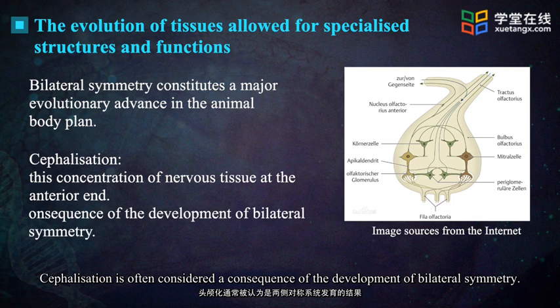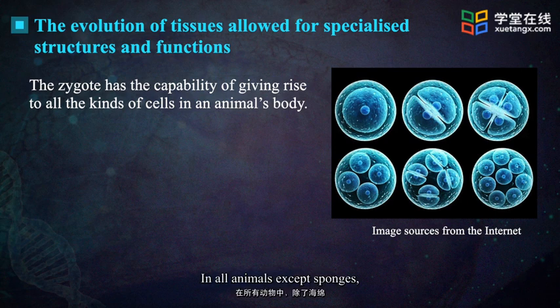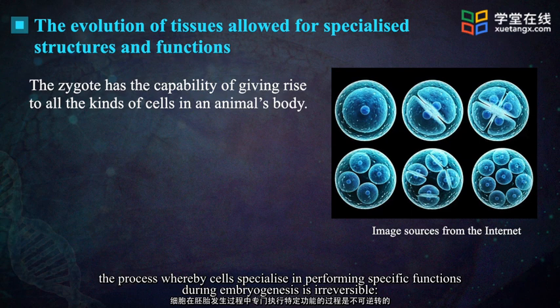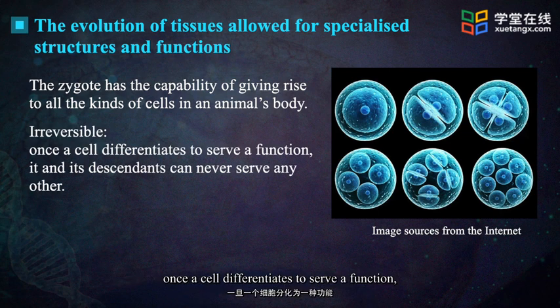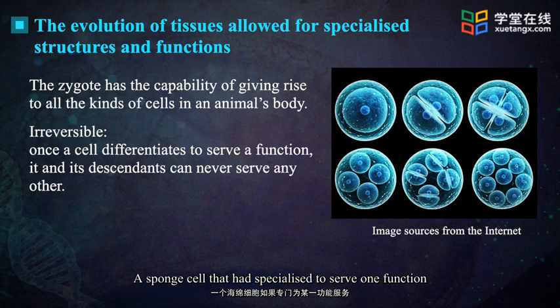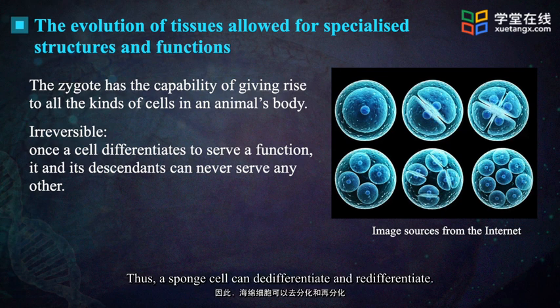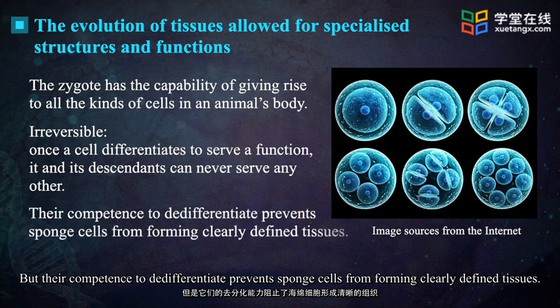Cephalization is often considered a consequence of the development of bilateral symmetry. The zygote has the capability of giving rise to all the kinds of cells in an animal's body — that is, it is totipotent. In all animals except sponges, the process whereby cells specialize in performing specific functions during embryogenesis is irreversible. Once a cell differentiates to serve a function, it and its descendants can never serve any other. A sponge cell that had specialized to serve one function can lose those attributes and change to serve another — it can de-differentiate and re-differentiate — but this competence prevents sponge cells from forming clearly defined tissues.